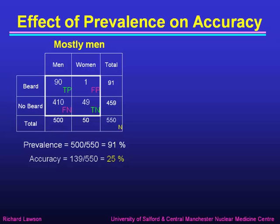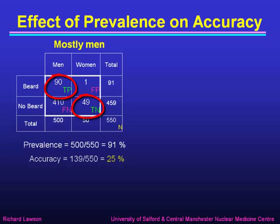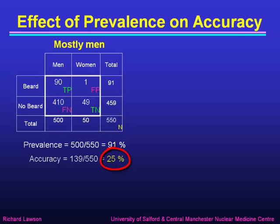Let's look at what happens if the prevalence changes. Here's a group with 500 men and 50 women — taken from a population like a football crowd where the majority happen to be men. The prevalence is 500 over 550, which is 91 percent — a very high prevalence of men. The accuracy is the true positives (90) plus true negatives (49), making 139 correct out of 550, which is 25 percent. So our test is only 25 percent accurate in this population.